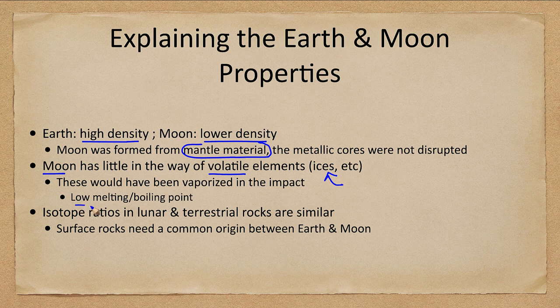These volatile elements would have been completely vaporized — anything with a low melting or boiling point would have been lost in this impact. We also see that isotope ratios, looking at different isotopes of various elements in lunar and terrestrial rocks, are roughly the same.